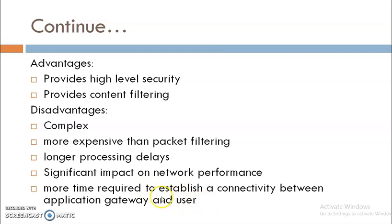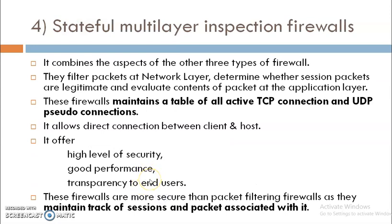The fourth type is the Stateful Multi-Layer Inspection Firewall. This firewall combines aspects of all three other types: it filters packets at the network layer, determines whether session packets are legal, and evaluates the content of packets at the application layer — working across all three layers of OSI. It maintains a table of all active TCP connections and UDP pseudo-connections, allows direct connection between client and host, offers a high level of security, good performance, transparency to the end user, and maintains track of sessions and packets associated with them.